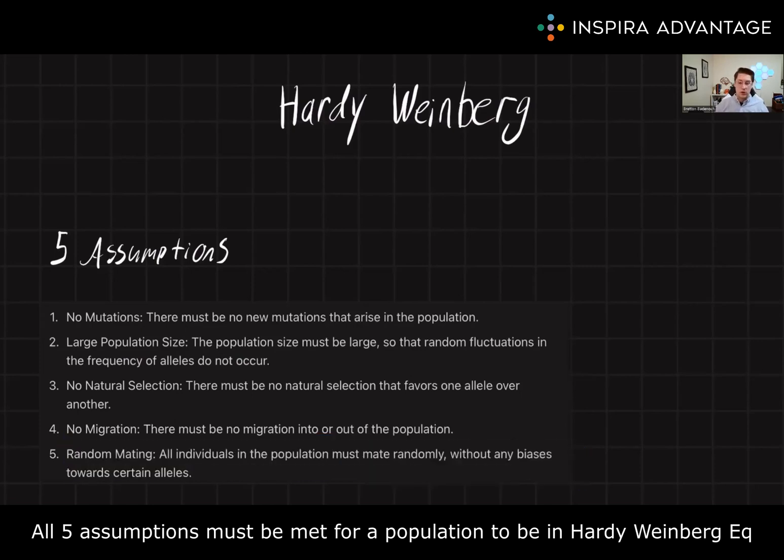And finally, there is only random mating. There is no sexual preference. All individuals in the population are just mating randomly without any bias, any sexual selection towards any certain alleles.